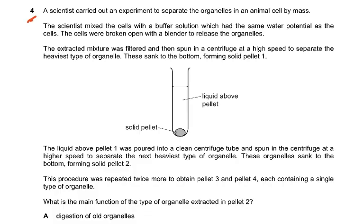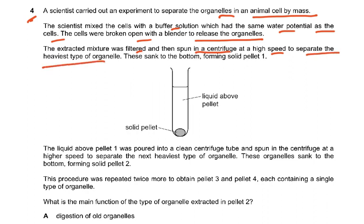Question 4: A scientist carried out an experiment to separate organelles in an animal cell by mass. The cells were mixed with a buffer solution with the same water potential as the cells, then broken open with a blender to release the organelles. The extracted mixture was filtered and spun in a centrifuge at high speed. The heaviest organelles sank to the bottom forming pellet 1 — which would be the nucleus.